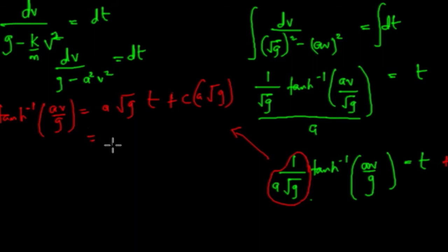So what this is going to give us is going to be a root g times t plus this and this and this. They are all constants, so it's a new constant, so we're going to call that c1.